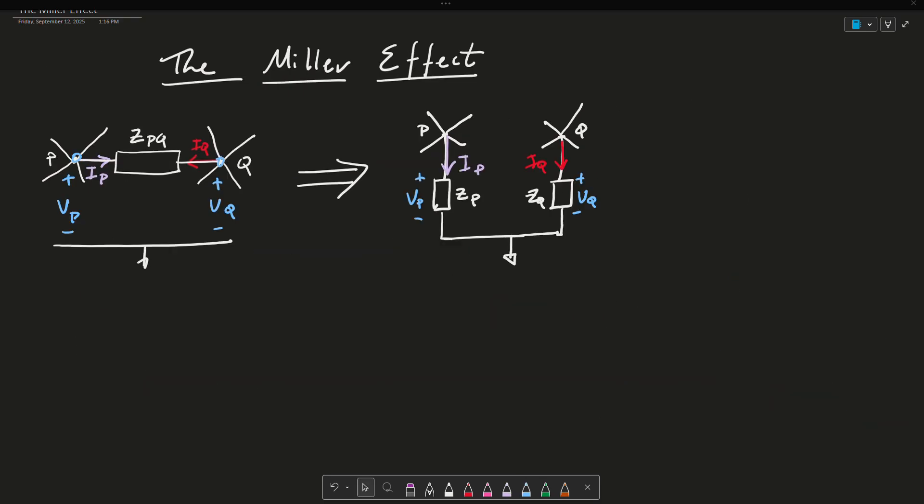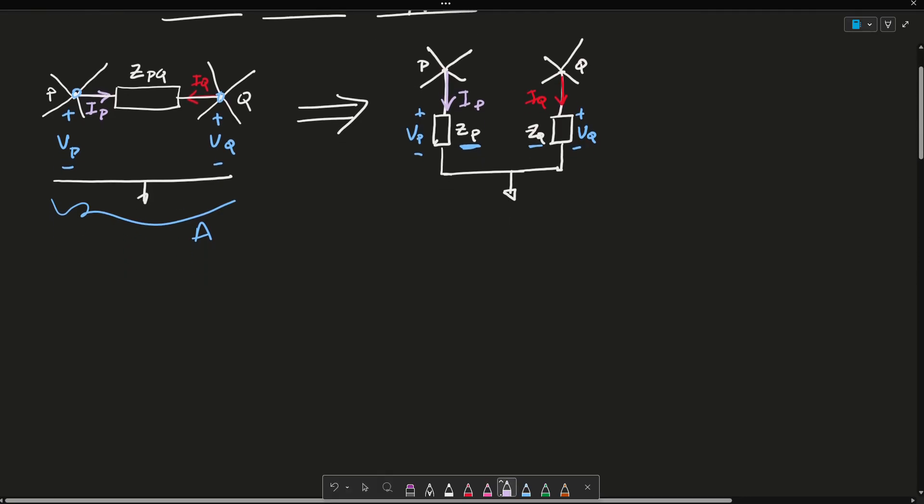So the goal here is to find an equation for ZP and ZQ. Because given this circuit here A, we know everything here. We know VP, we know VQ, we know ZPQ, we know IP, we know IQ, or we can find them. Those are given. Now we want to map it over here in such a way where the only thing that we're missing is the ZP. So what I'm going to do is find our ZP.